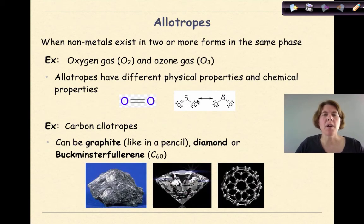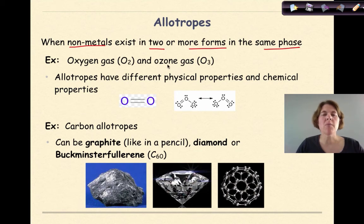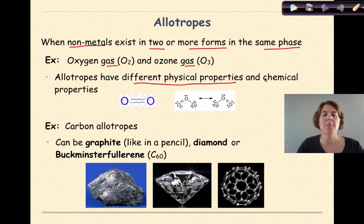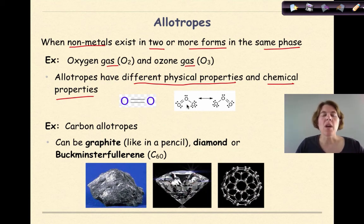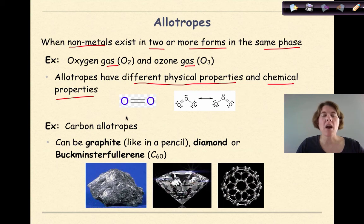Allotropes — what is an allotrope? An allotrope is when non-metals exist in two or more forms in the same phase. For example, oxygen gas versus ozone gas: they're both in the gas phase, both made of only oxygen, but they are bound together differently and have different numbers of oxygen atoms. Allotropes have different physical properties and chemical properties, but exist as only one element.